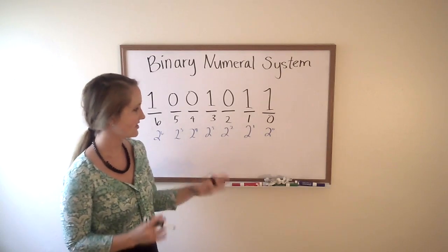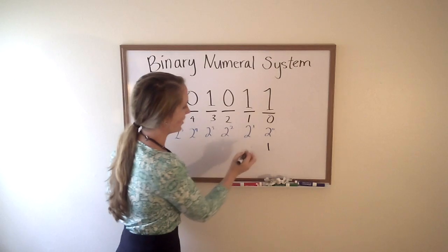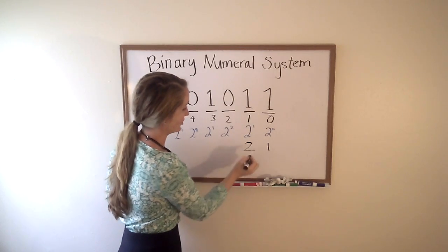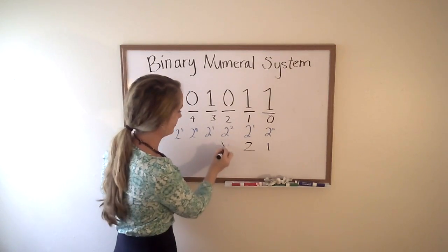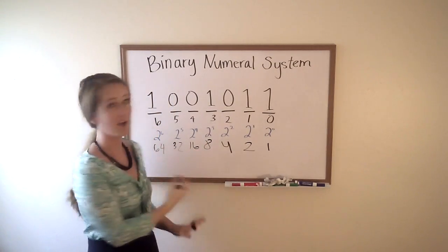all we've got to do is fill in some blanks and we'll have our solution. Two to the zero is, you got it, one. Two to the one is two. Two to the two is four. And we've got eight, sixteen, thirty-two, sixty-four. And that just keeps going on and on.